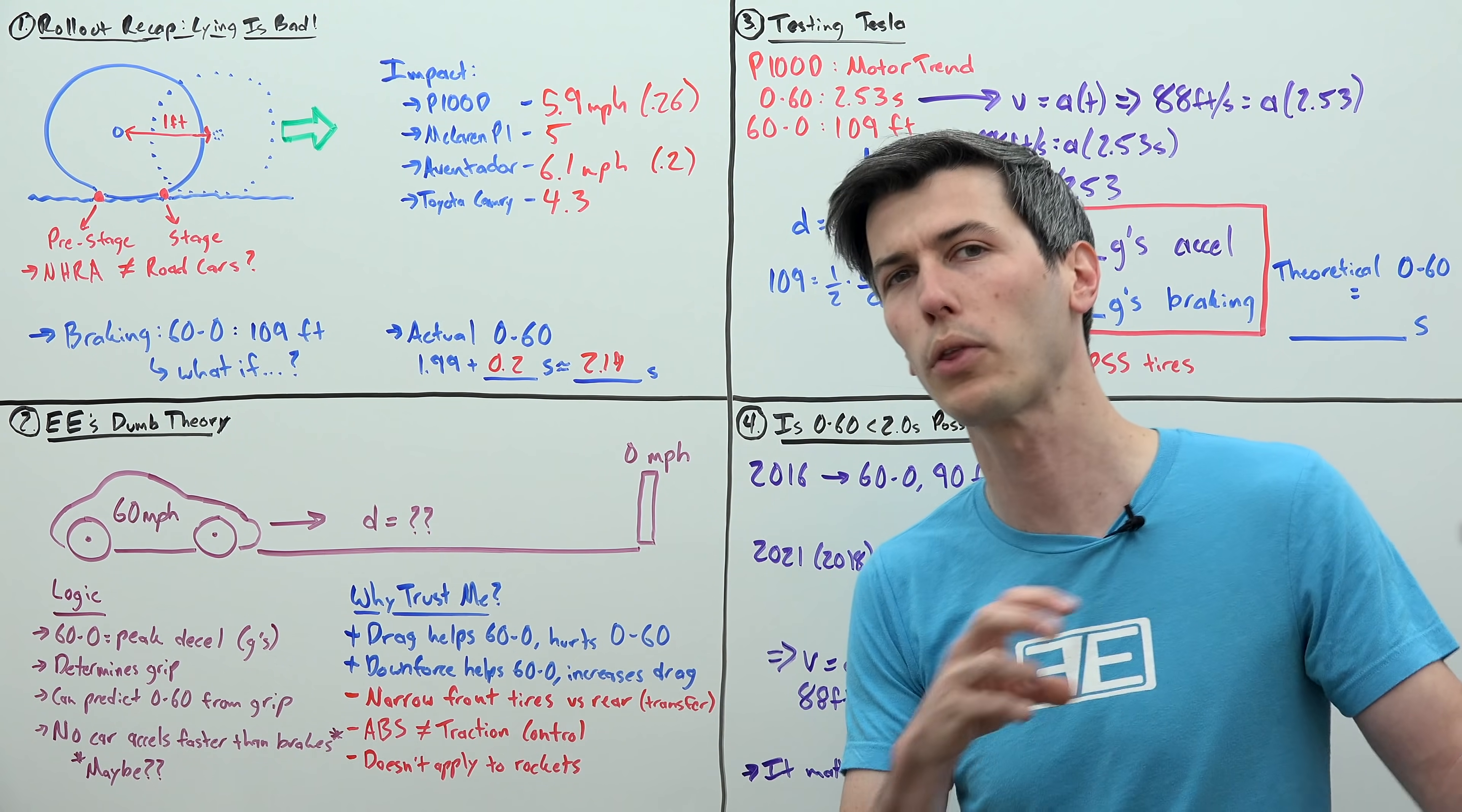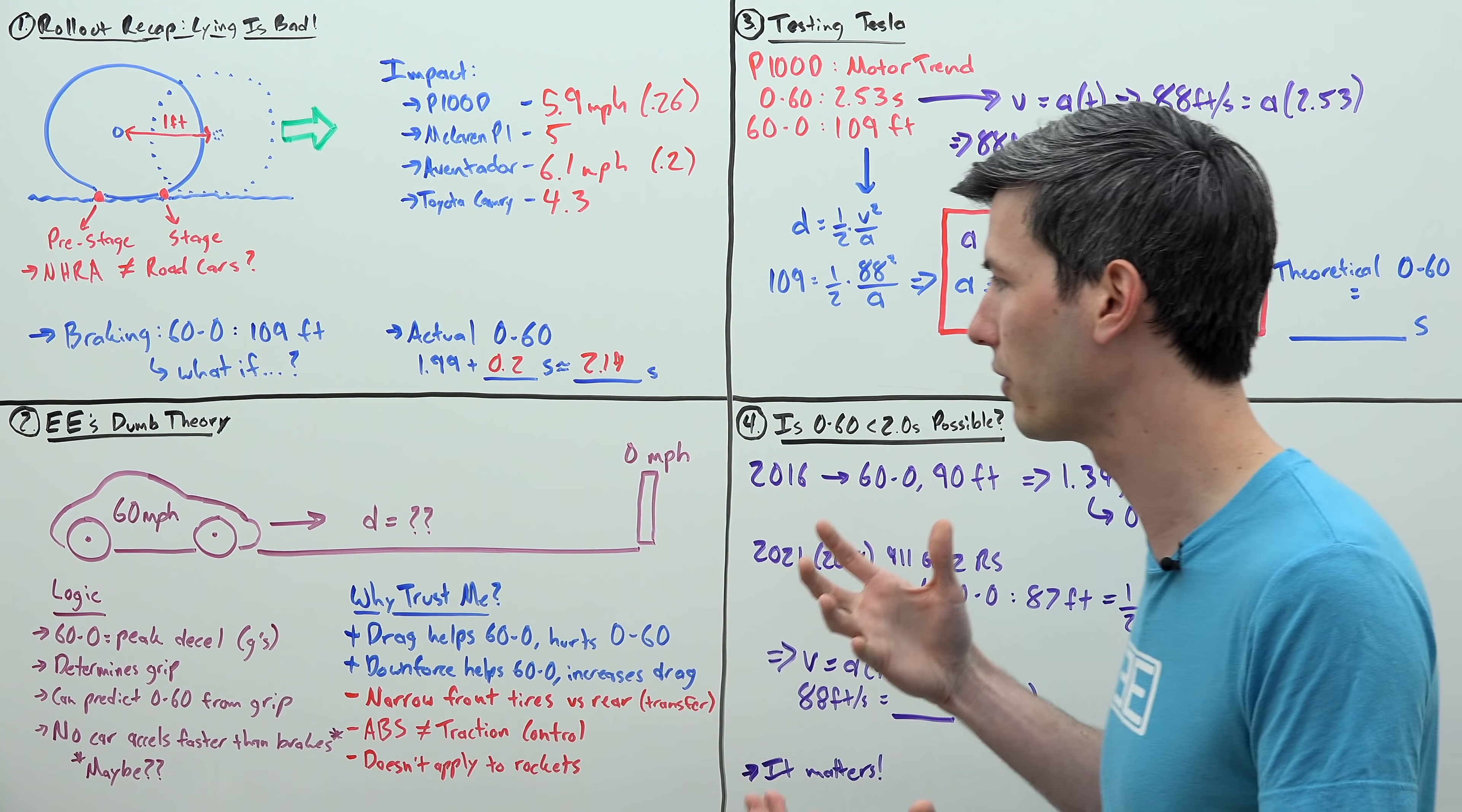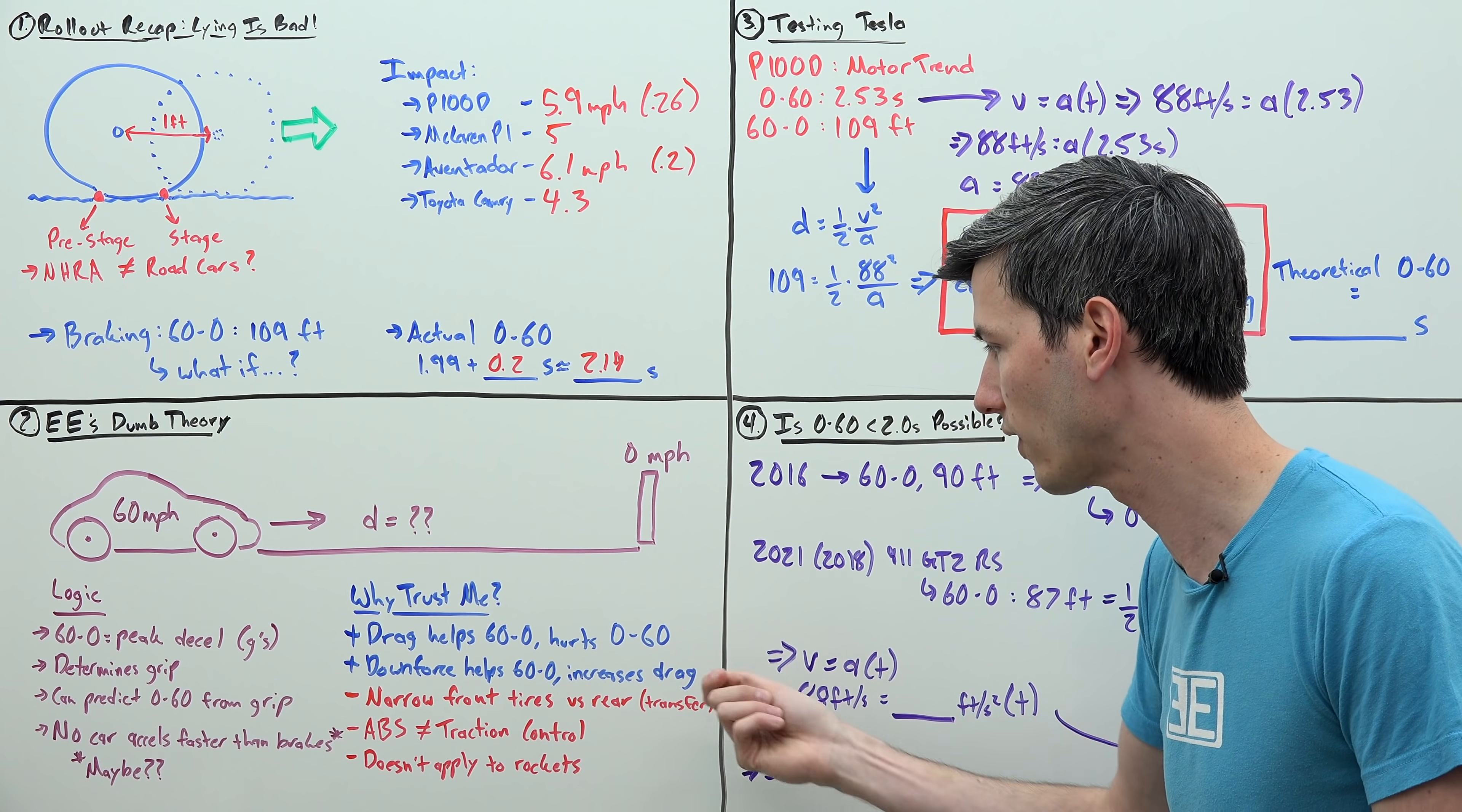Also, downforce can help your 60 to 0. Now, it could also theoretically help your 0 to 60, but because the speeds are so low, it's not going to be that much downforce. Really, we're just talking about a little bit of added drag, which is going to slow your car down, not help it speed up. On the flip side, there are a couple advantages in accelerating versus braking. Usually cars that are very quick at accelerating have larger rear tires than front tires, meaning the bigger tires have more weight on them while accelerating. So that's an advantage to accelerating.